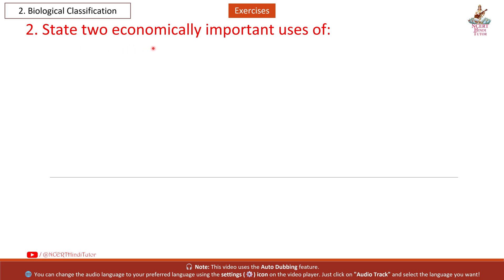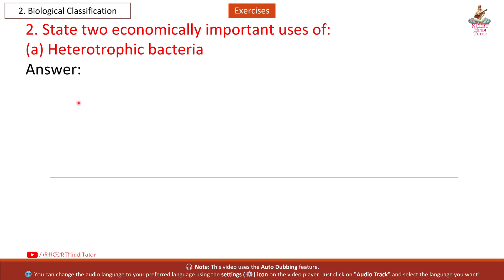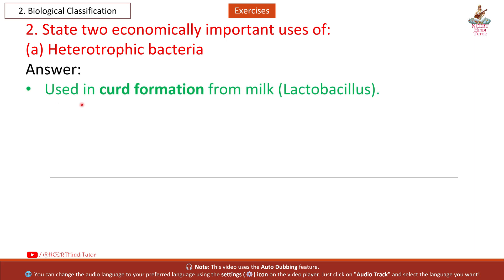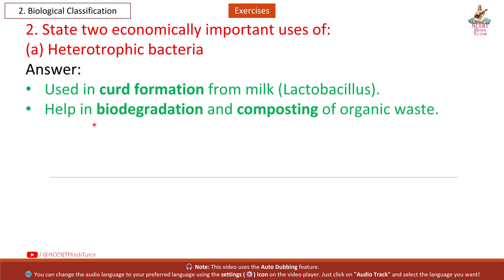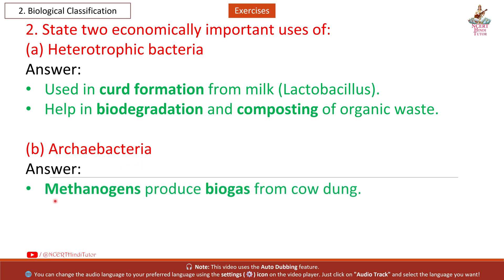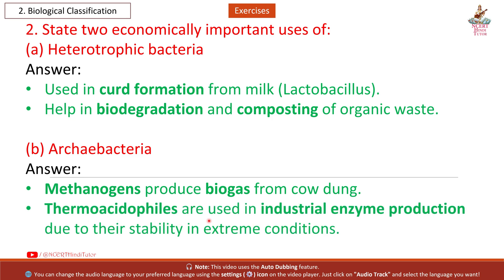Question 2: State two economically important uses of heterotrophic bacteria. Answer: (a) Eubacteria — used in curd formation from milk; Lactobacillus helps in biodegradation and composting of organic waste. (b) Archaebacteria — methanogens produce biogas from cow dung.